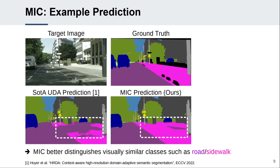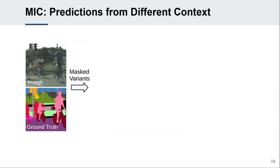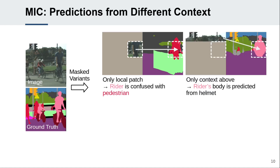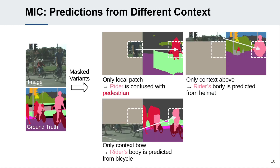After UDA with MIC, the network is able to better exploit context relations and succeeds in correctly segmenting difficult areas that rely on context clues, such as the curb for the sidewalk. To further illustrate the learned context relations, we visualize predictions of masked image variants. Only using a local patch, the network cannot distinguish the rider from a pedestrian. However, based on the helmet or the bicycle, MIC can correctly infer the rider's body.